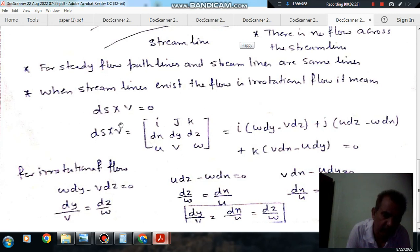So, this is the velocity vector. This is the product of space vector into velocity vector. As for the irrotational flow, they are in same phase, so their product should be zero. And this can be solved by the solution matrix: i, j, k, dx, dy, dz, u, v, w.